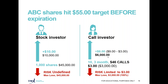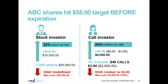If the shares go up and hit the $55 target before expiration, the call investor is actually up $6 per share — less than the actual stock investor in absolute terms. But while the stock investor has a 22% return on their risk, the call investor has returned 200% on their risk. This is where the opportunity to leverage one's capital with a limited risk exposure comes into play.